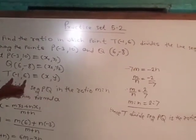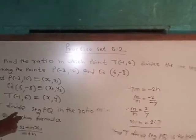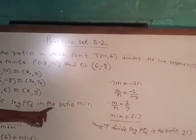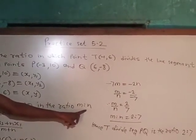and T have coordinates (x, y). Therefore T(-1, 6) equals (x, y). Let T divide segment PQ in the ratio m:n.